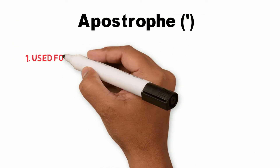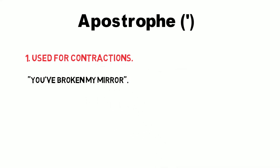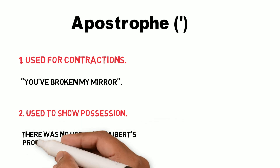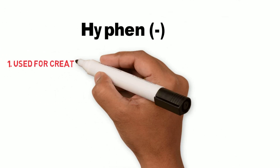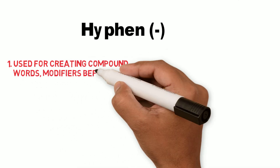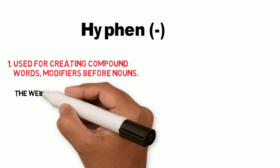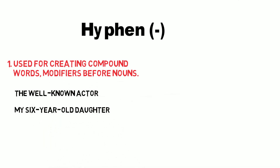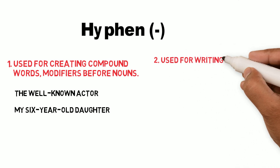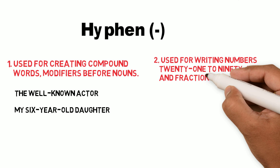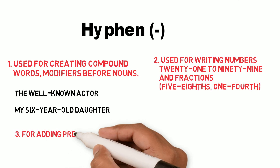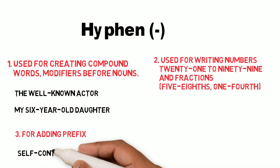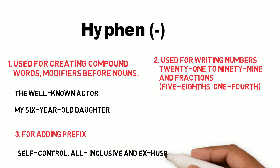Apostrophe. Used for contractions. For example, you have broken my mirror. Used to show possession. There was no use of Mr. Hubbard's protesting, for nobody believed him. Hyphen. Used for creating compound words, modifiers before nouns. For example, the well-known actor, my six-year-old daughter. Used for writing numbers 21 to 99 and fractions, five-eighths, one-fourth. For adding a prefix, for example, self-control, all-inclusive, and ex-husband.